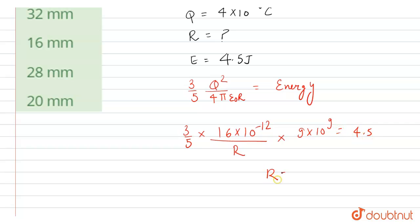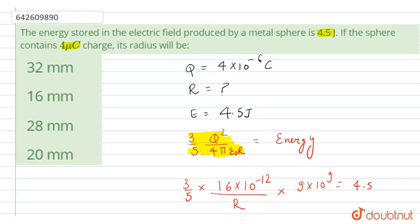On solving this equation for R, we get the value 19.2 millimeters, which is nearly equal to 20 millimeters. This is based on the formula for energy stored in a capacitor. Hence 20 millimeters is the radius, option D.